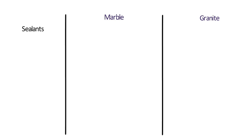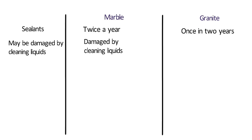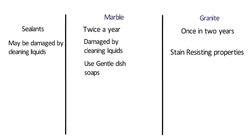Both granite and marble need sealing to keep the materials beautiful. Marble requires sealing much more frequently — twice a year — whereas for granite, sealing is required once every two years. Both granite and marble can be damaged by cleaning liquids, so use gentle dish soaps. Marble requires a diligent schedule of resealing to protect its porous surface, while granite countertops have inherent stain-resisting properties and need less frequent sealer application.